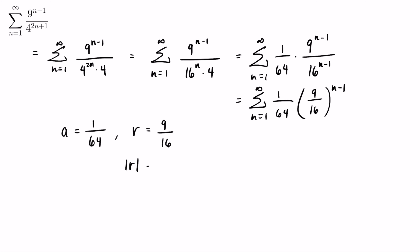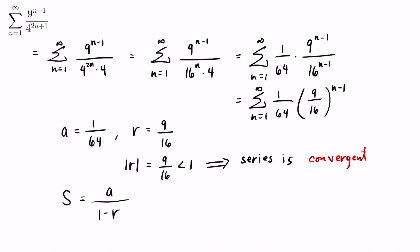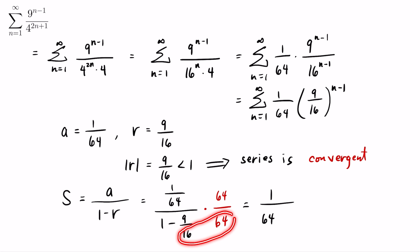Because the absolute value of the common ratio, which equals 9/16, is less than 1, this implies the series is convergent. The sum S equals a over 1 minus R, which is (1/64) over (1 − 9/16). Multiplying numerator and denominator by 64 gives 1 over (64 − 36), which equals 1 over 28. So the sum of this series is 1 over 28.